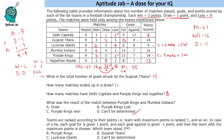Teams are ranked according to their points — the team with the maximum points is ranked 1st and so on. In case of a tie, each goal for gives 1 point and each goal against gives minus 1 point, and the team with the maximum net is chosen. Looking at the table, Mumbai Indians is clearly first. Two teams are tied on 14 points: Punjab Kings and Gujarat Titans. Gujarat Titans have 15 goals for minus 9 goals against, a difference of 6. Punjab Kings have 11 minus 7, which is 4. So Gujarat Titans rank second.